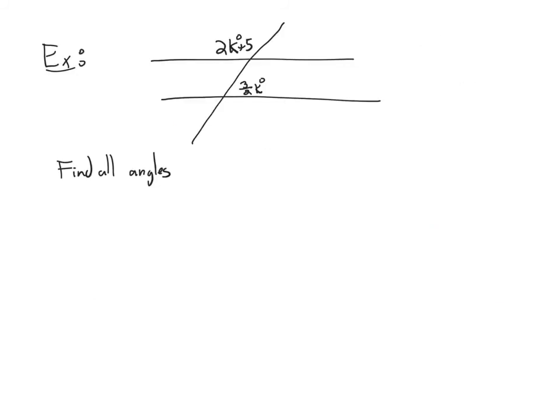Let's try another problem. I'm giving you two angle measures in terms of unknown k: this angle is 2k + 5 degrees, and this angle is 3/2 k degrees. Pause the video and try to figure out the measures of all eight angles. These two lines are indeed parallel, so this is a transversal of parallel lines.